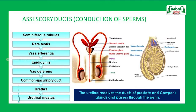The accessory ducts of the male reproductive system are: rete testis, vasa efferentia, epididymis, and vas deferens. The pathway of sperms through the accessory ducts is: sperms enter from the seminiferous tubules to the rete testis, from rete testis to vasa efferentia, from vasa efferentia to epididymis, from epididymis to vas deferens, from where it passes to the urethra, and then outside through the urethral meatus.